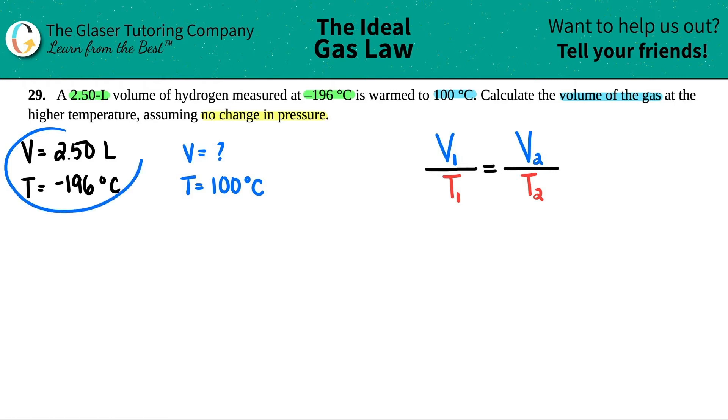Now it does not matter which set you call one or two. Absolutely doesn't matter. The only thing that is important is that these are grouped together as the ones or twos, and these are grouped as the other number. You can't group this volume with this temperature. They don't go together. I hope that makes sense.